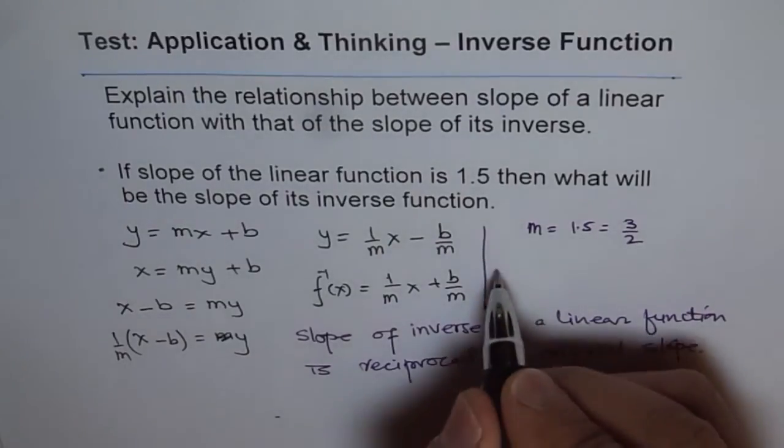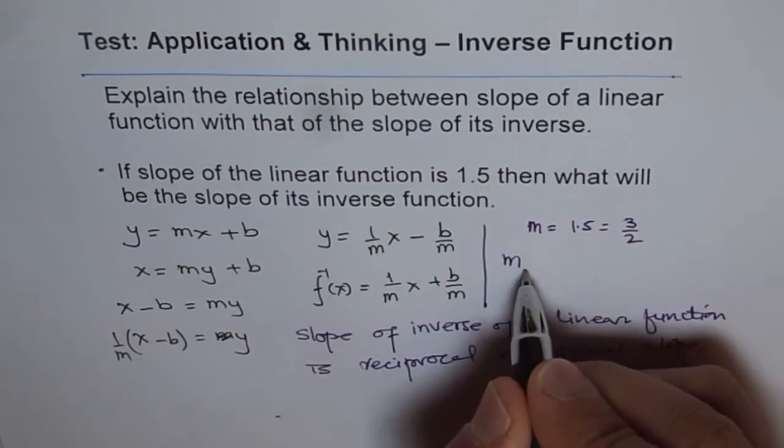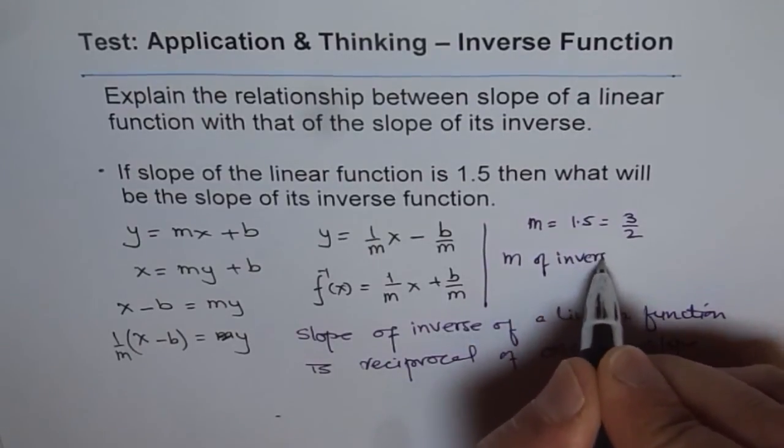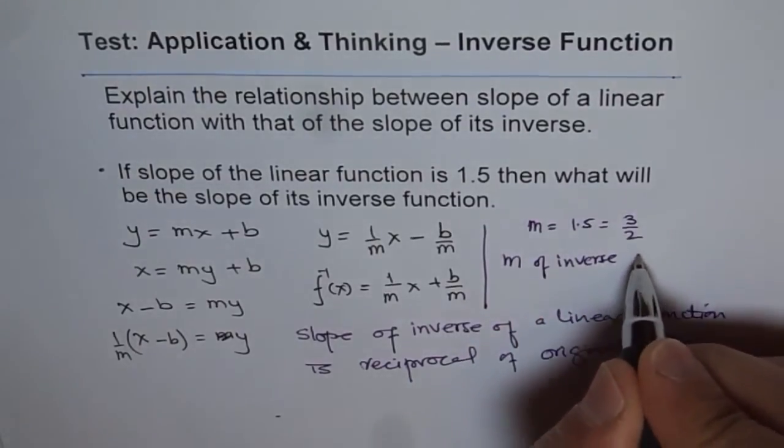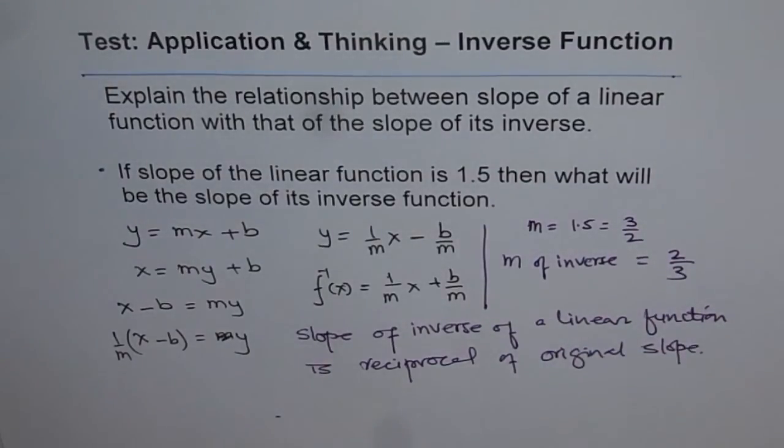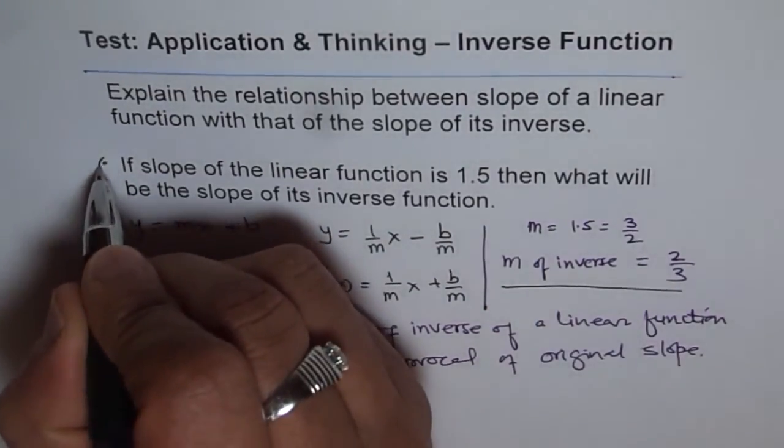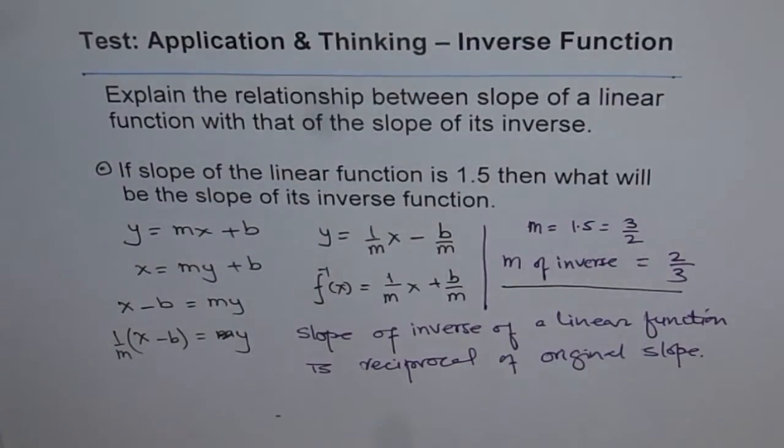So slope of inverse function is equals to 2 over 3. It will just flip, so that is going to be our answer. So that is the answer for part b.